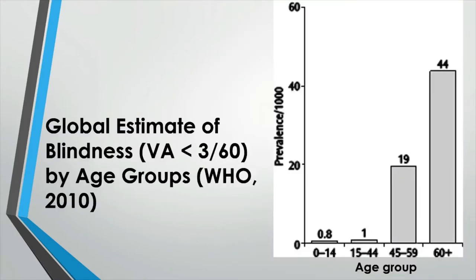In 2010, the WHO reported that there were 285 million visually impaired people in the world, based on prevalence figures calculated from cross-sectional studies. Here is one of the visual summaries of global estimation of blindness by different age groups from the same report, using their categorization of visual function.